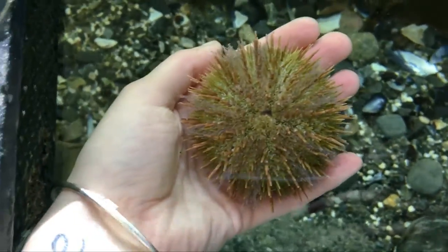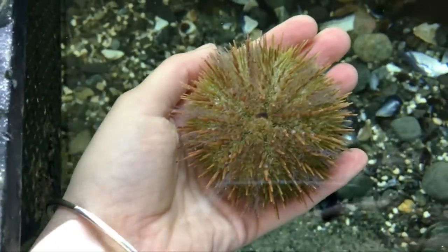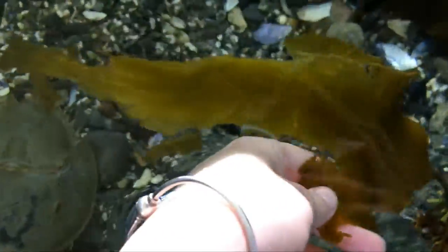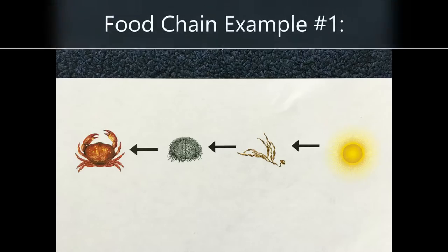Green sea urchins love to eat seaweed, and seaweed makes its food from the sun's energy. Seaweed can be any type, and this is an example of some seaweed. Crabs get their energy from the green sea urchin. The green sea urchin gets its energy from seaweed, and the seaweed gets its energy from the sun. That is an example of one food chain.